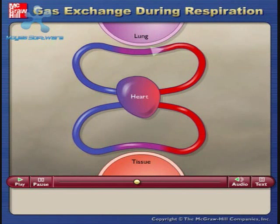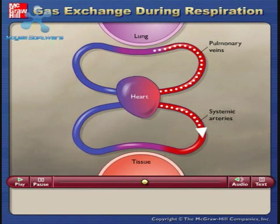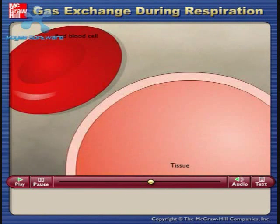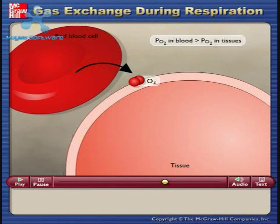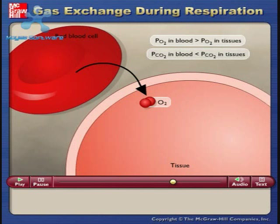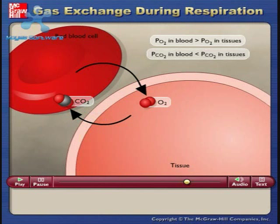Oxygen-rich blood is carried through pulmonary veins to the heart and then pumped through systemic arteries to the body. The pO2 in the blood is higher than the pO2 in the body tissues, so oxygen diffuses out from red blood cells at the body tissues. Also, the pCO2 in the blood is lower than the pCO2 in the body tissues, so carbon dioxide diffuses into red blood cells there.